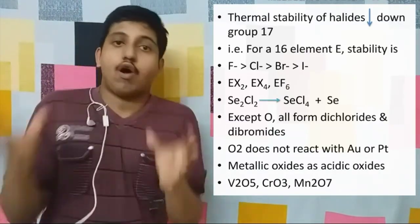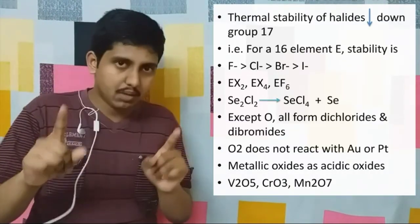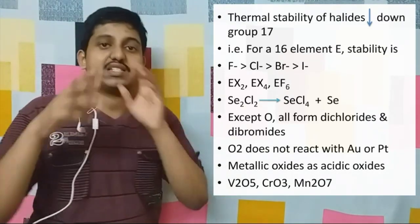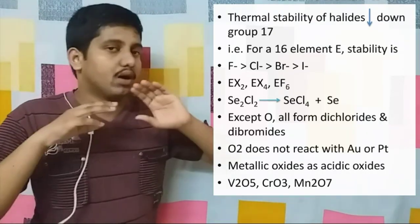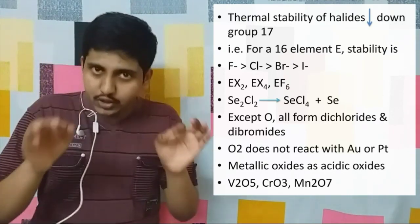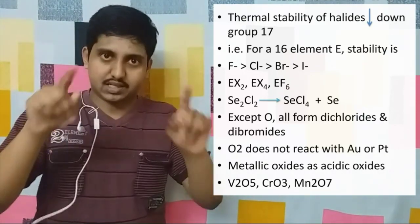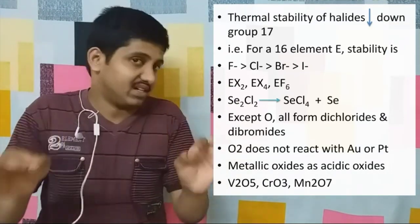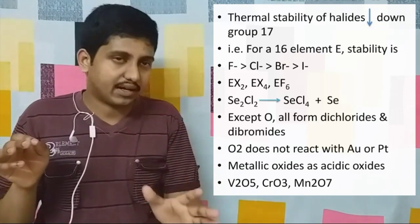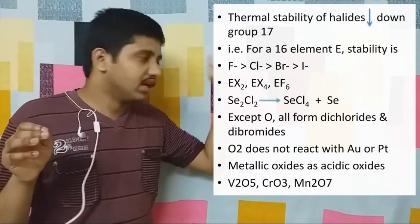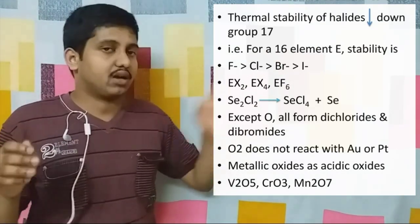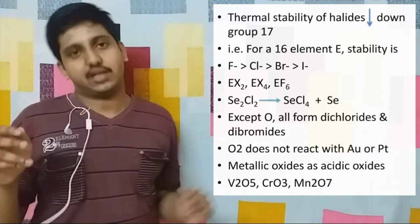Next, regarding the reaction of oxygen with metals: oxygen does not react with Au and Pt — that is, gold and platinum. Another important point is that usually all metallic oxides are basic in nature, as I have said in my P block video, but there are a few exceptions. The exceptions are V2O5, CrO3, and Mn2O7 — they are not basic but acidic in nature.